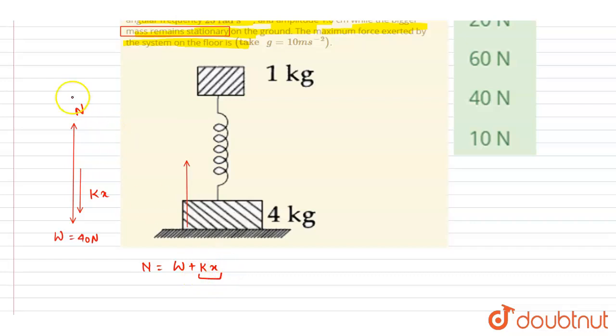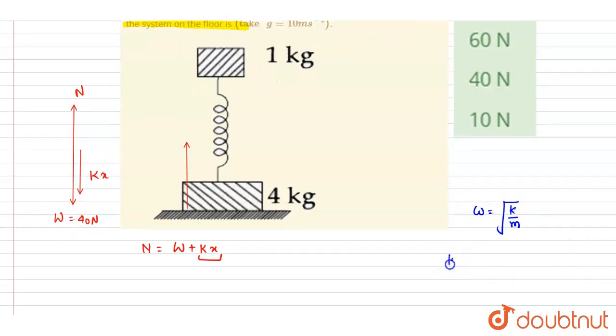If you see here, we know that omega is equal to under root k by m, right? So from here you got that k will be m omega square.